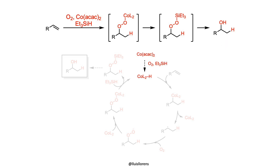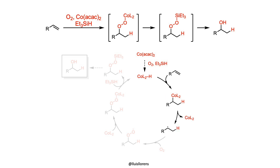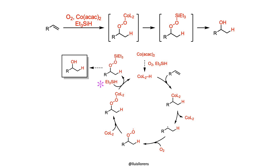The first step of the catalytic cycle involves the formation of a metal hydride complex. Insertion of the double bond into the metal hydride generates a cobalt-alkyl bond that undergoes homolytic cleavage. The resulting carbon-centered radical reacts with molecular oxygen, generating a chemical species that is subsequently trapped by the cobalt complex to form a cobalt-peroxide adduct. Final transmetallation with triethylsilane regenerates the metal hydride and delivers a silyl peroxide adduct.